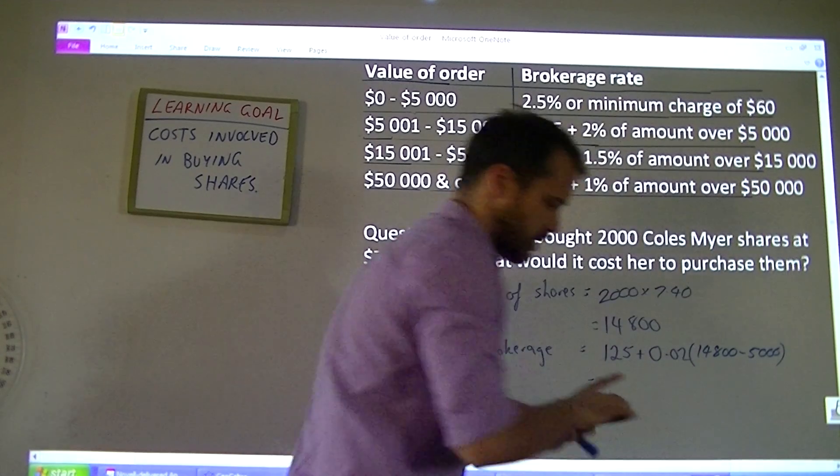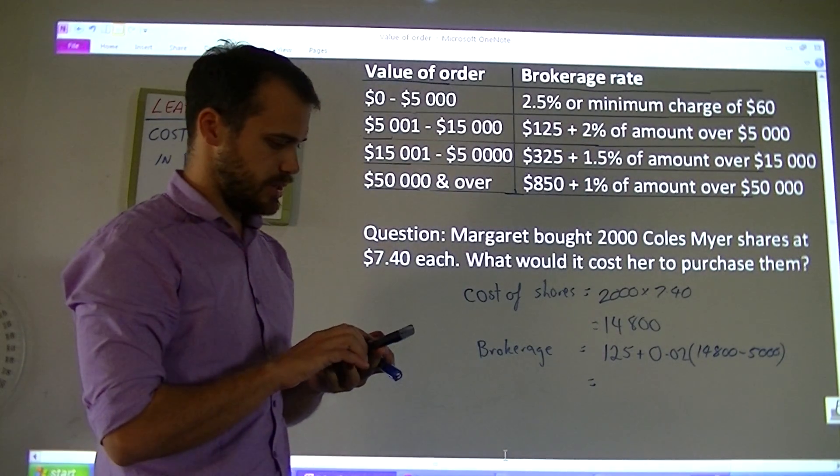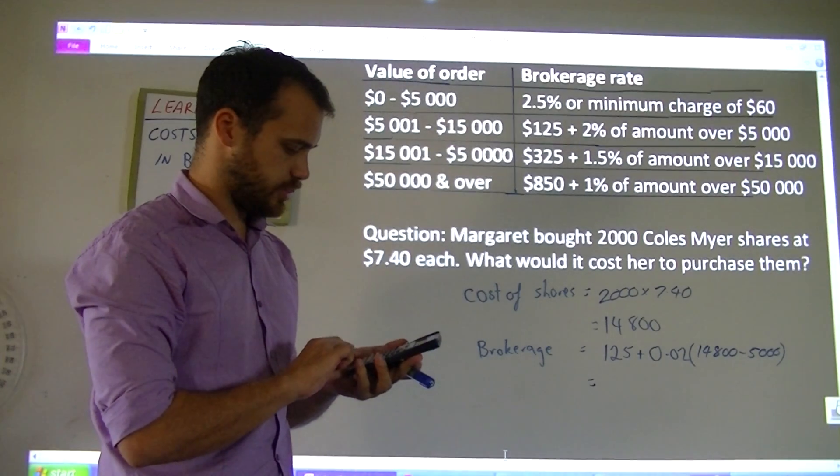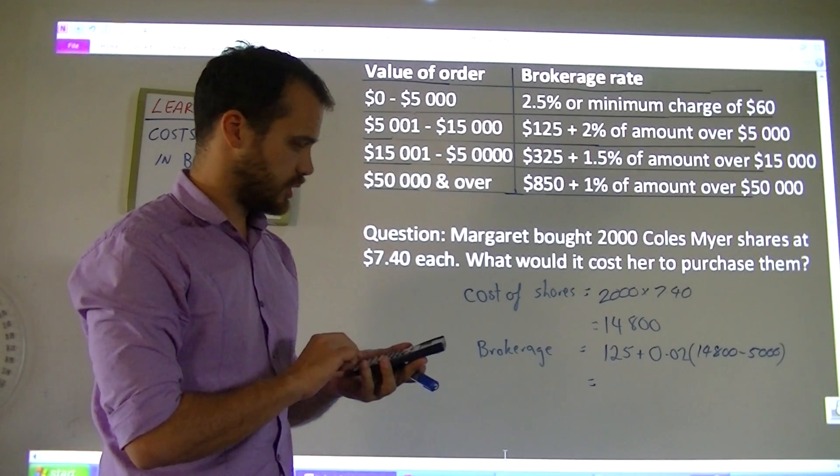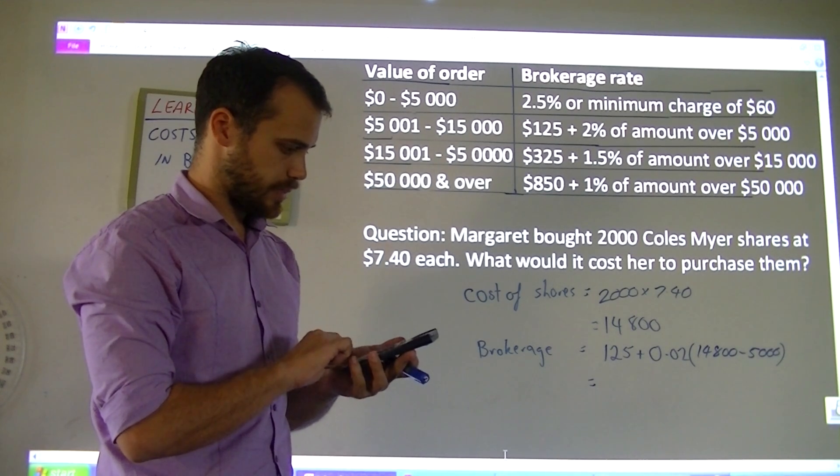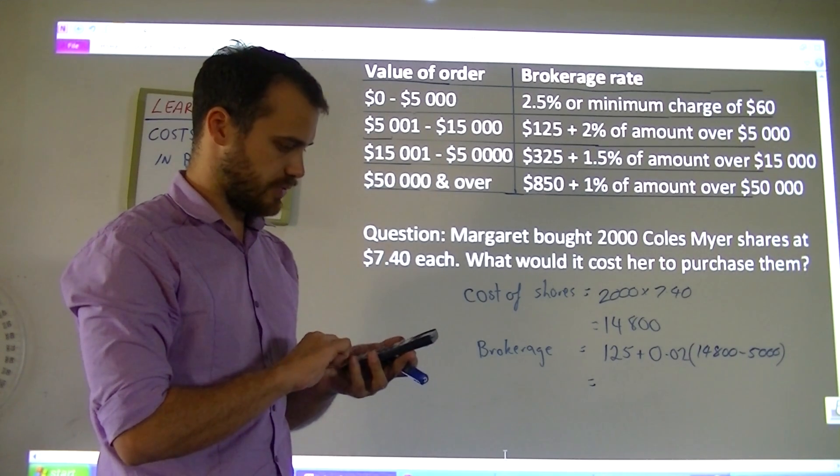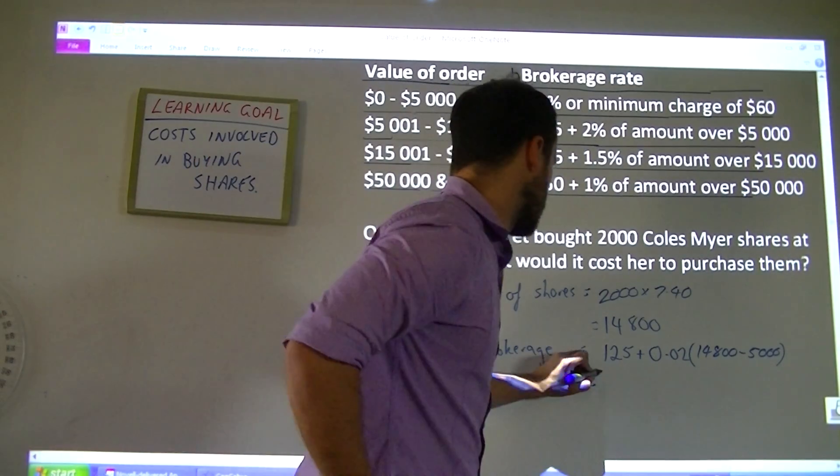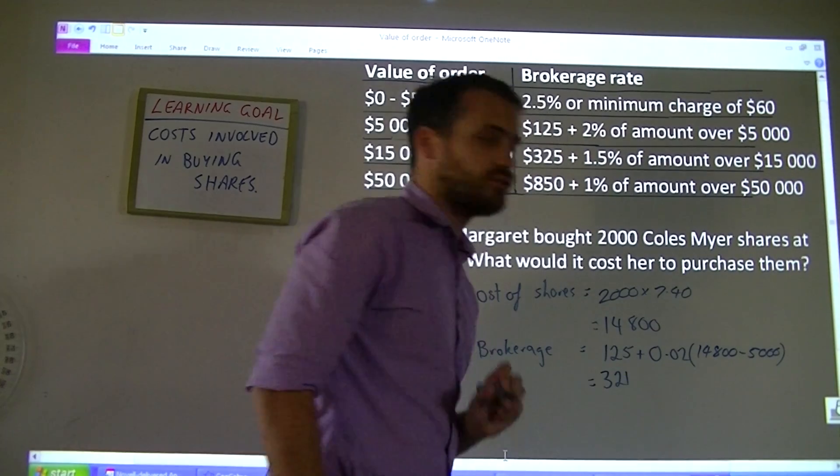You should be able to type that into your calculator in one go: $125 plus 0.02 times $14,800 minus $5,000. That's going to give us a brokerage fee of $321.